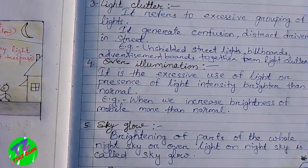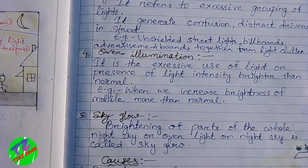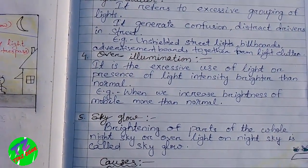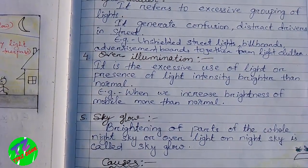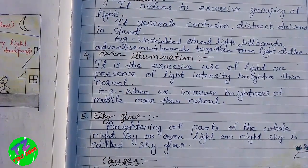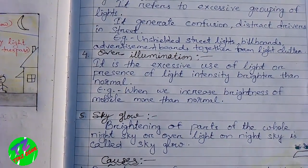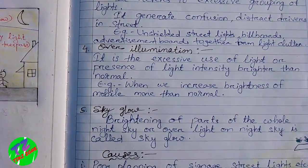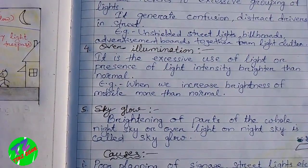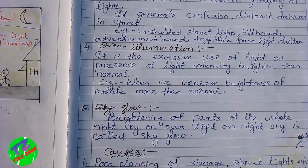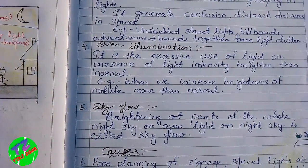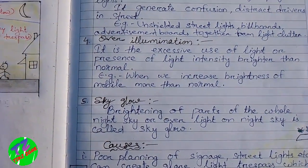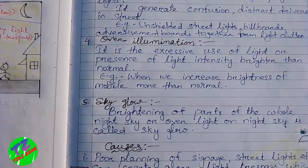The next type is over illumination. Over illumination is the excessive use of light or the presence of light intensity brighter than normal. An example of over illumination is when we increase the brightness of a mobile phone more than normal.